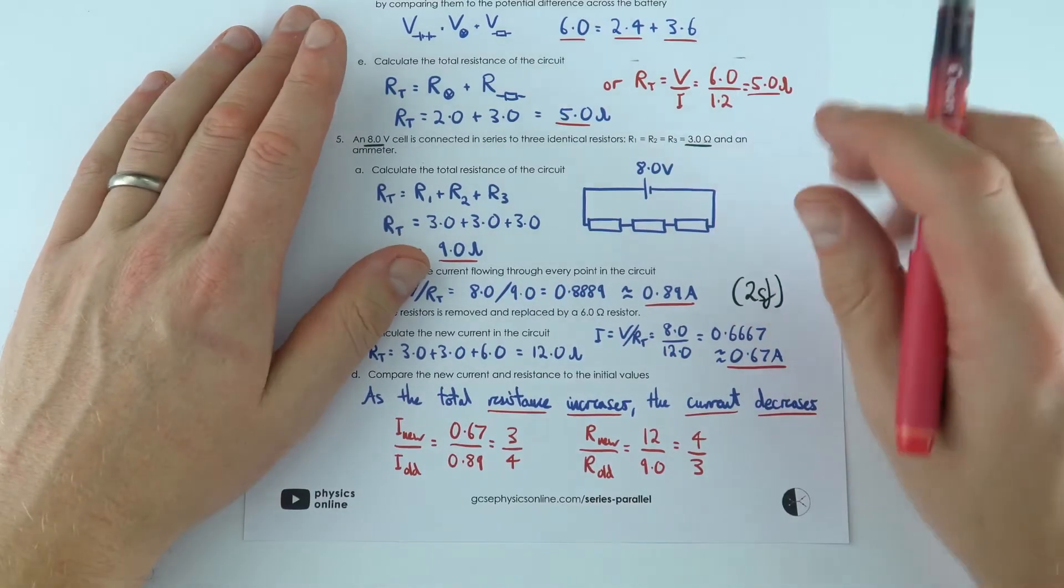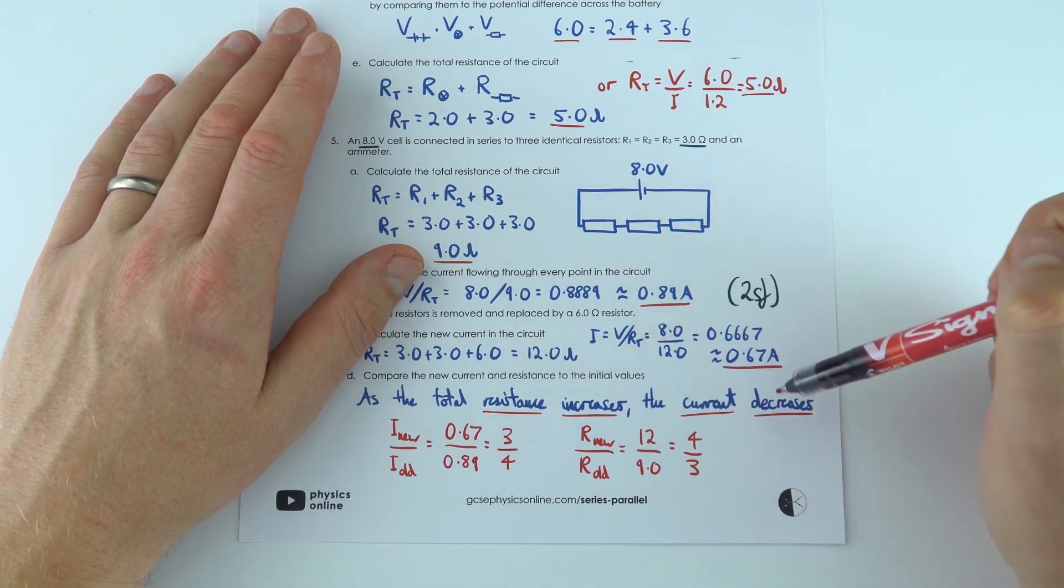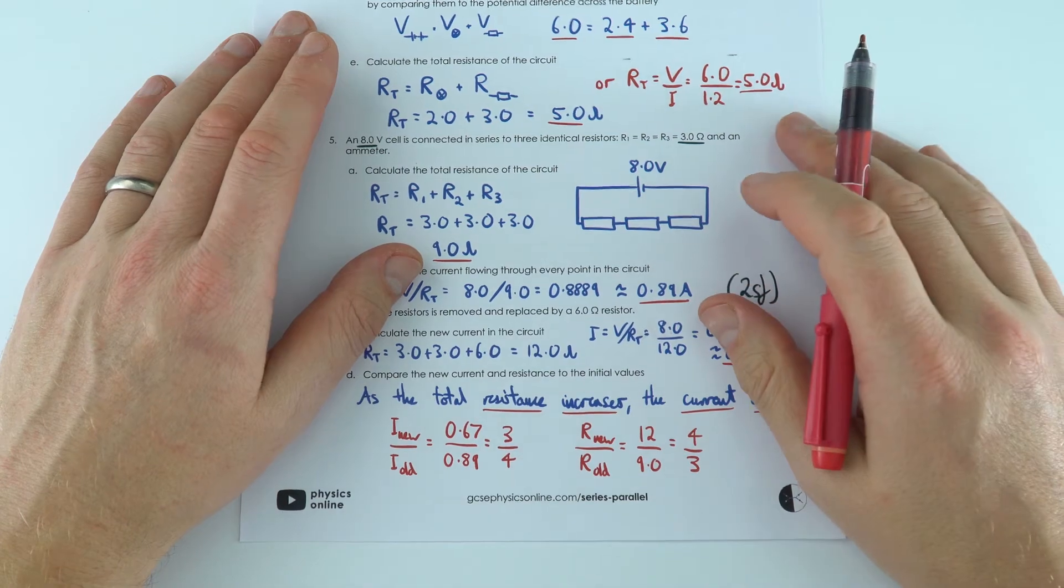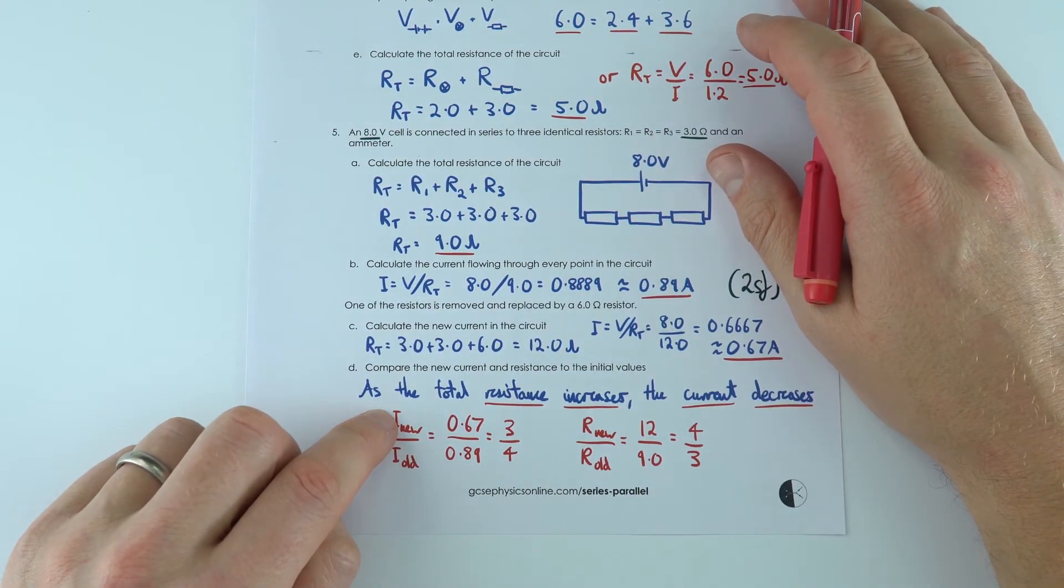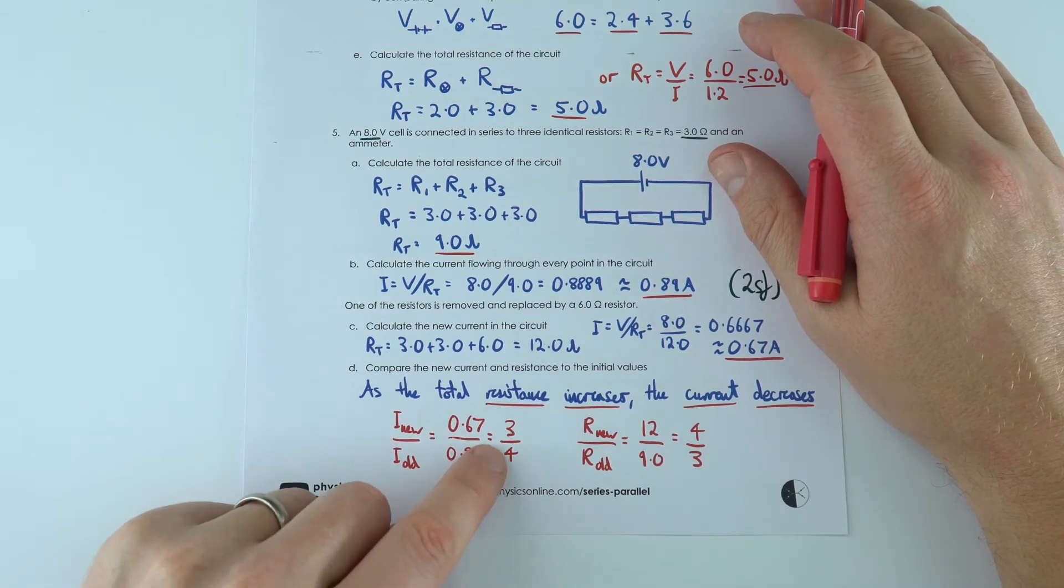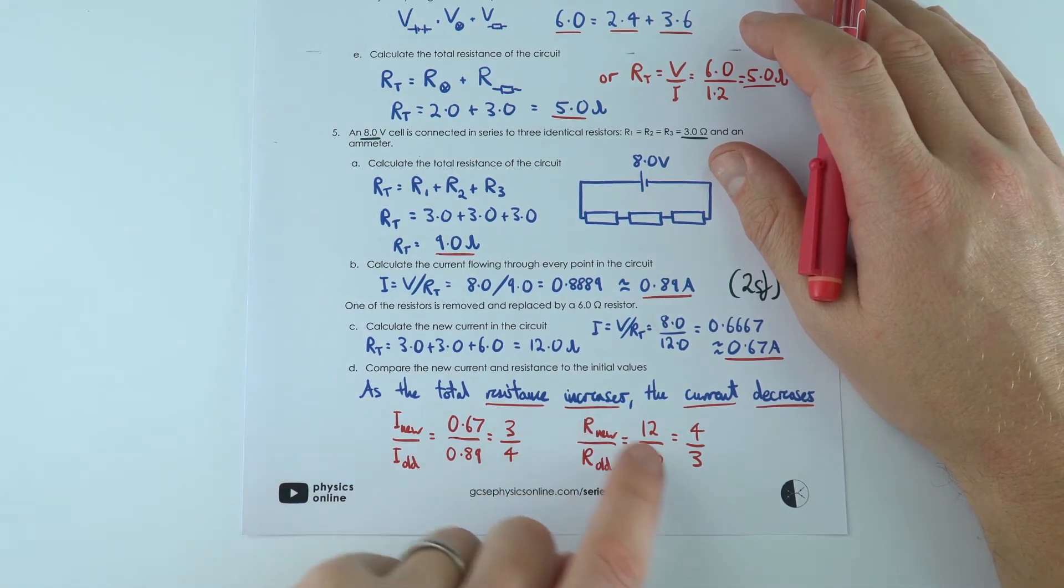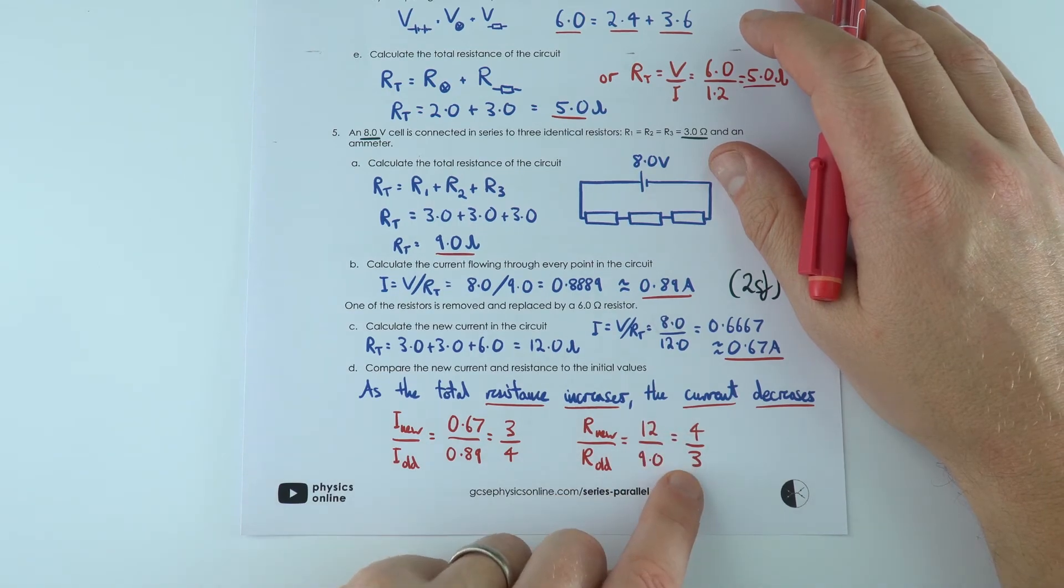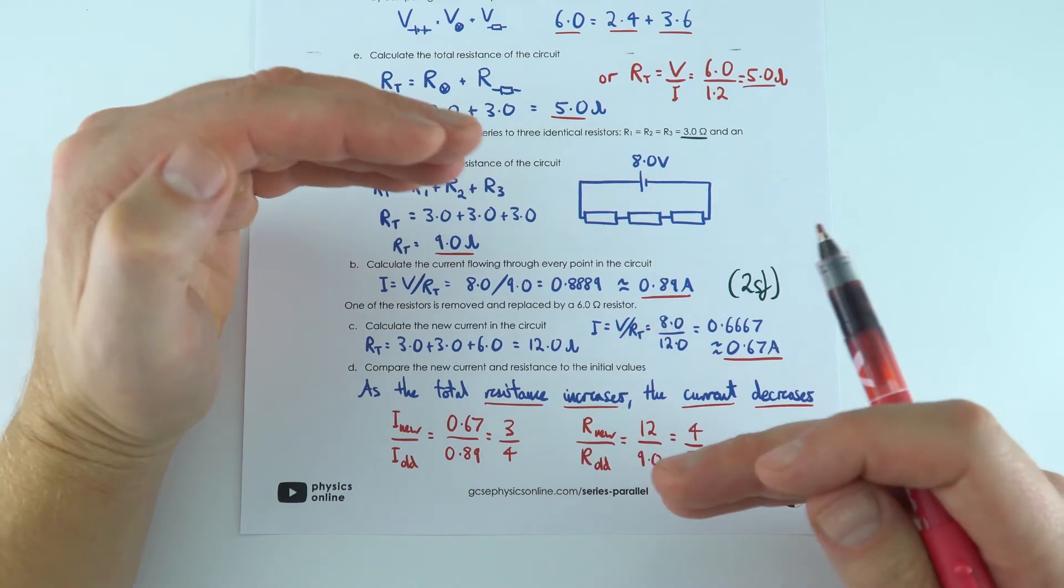Now basically what we find is as a resistance increases the current decreases, and that's when you've got the same potential difference. And look what I did here was I looked at the current, the new current compared to the old current, to find that it's 3 quarters of what it was, but if we look at the ratio of the resistances we find that they are 4 thirds. So basically as the resistance goes up the current goes down by the same proportion.